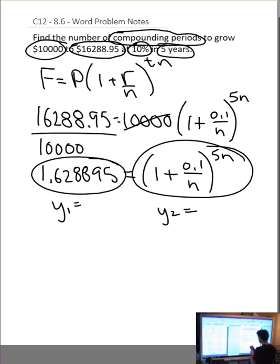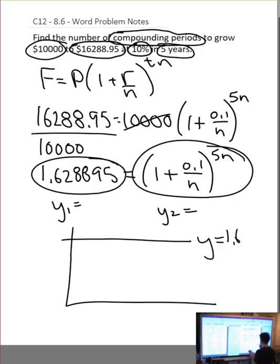So, I'm going to change my window because I know my y values only have to be about as high as 2. So, window, I'm going to change my x. Who knows, realistically compounding maybe 10 or 20 times. Let's say 10 and y max just about 2. So, if I put that on the graph, I get the line y equals 1.628895. And I get an interesting looking graph that comes up through like this with our intersection right here.